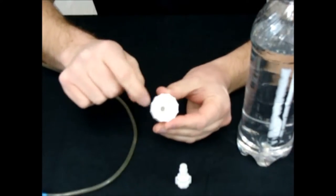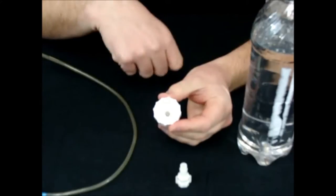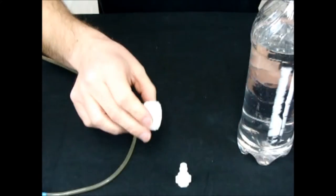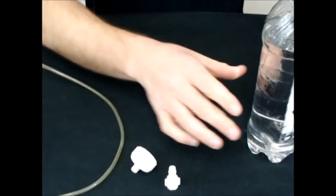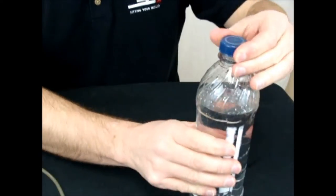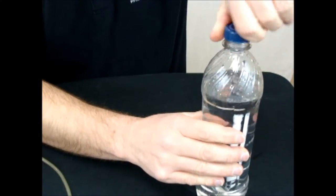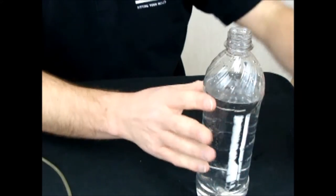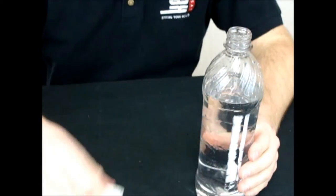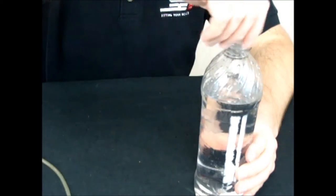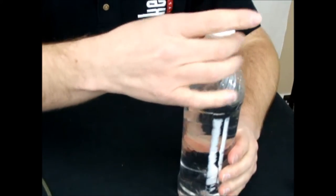You'll also notice that this particular bottle cap comes with an internal gasket. Now that gasket's going to be important. So what I'm going to do is take this water bottle here and pretend that it's a different liquid and add carbonation to it. That different liquid could be beer, wine, or even soda.